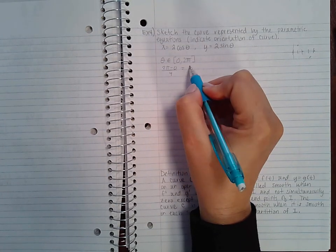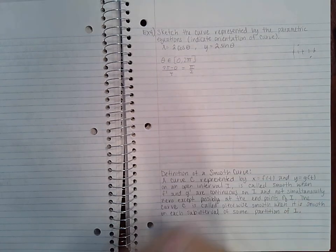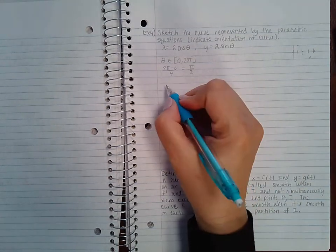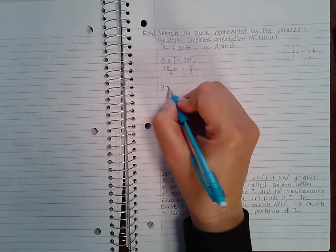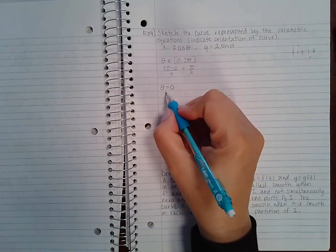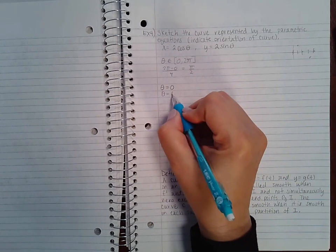So I take this 2π minus zero and divide it by four, and I get π/2, which means the values I'm going to use for theta are going to be in increments of π/2. So I'm going to start off first with theta equal to zero, that's the beginning point, and then I'm going to continue adding π/2.